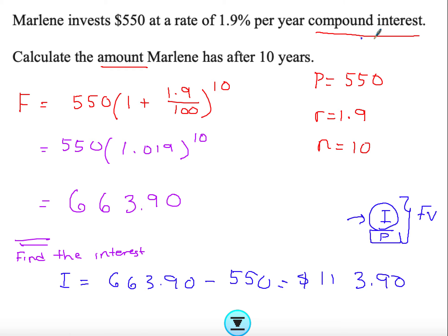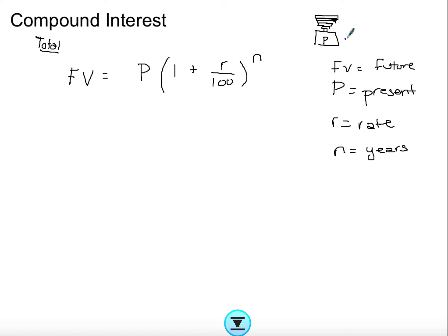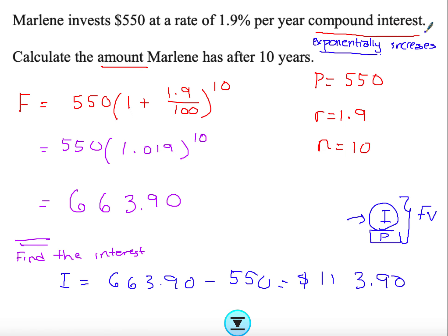Another term they might use for compound interest is that it 'exponentially increases'. Raising something to a power, where the power changes, produces exponential growth — this behavior of growing very quickly is called exponential growth. Sometimes exam questions may use this wording instead of 'compound interest', so just be aware of that.